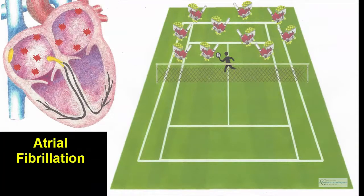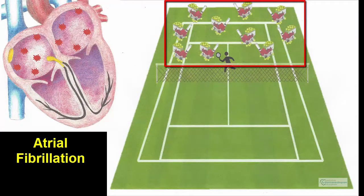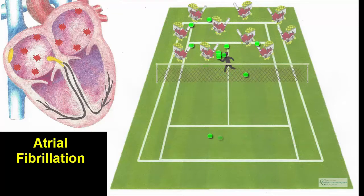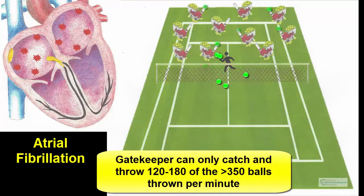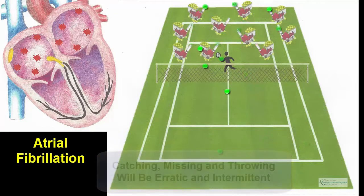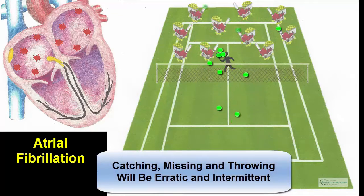Now imagine that instead of one ball machine, there are 10 ball machines located in different positions around the court. Each ball machine sends balls to the gatekeeper as fast as they can. The gatekeeper attempts to catch and throw as many balls as he can, as fast as he can, but can only go at a certain speed. Of the more than 350 balls that are hitting him each minute, he may be able to get and throw 120 to 180 of them. He'll catch one ball from here and throw it, then catch one from here, and then one from here — some he'll get, some he'll miss. His catching, missing, and throwing will be erratic and intermittent.